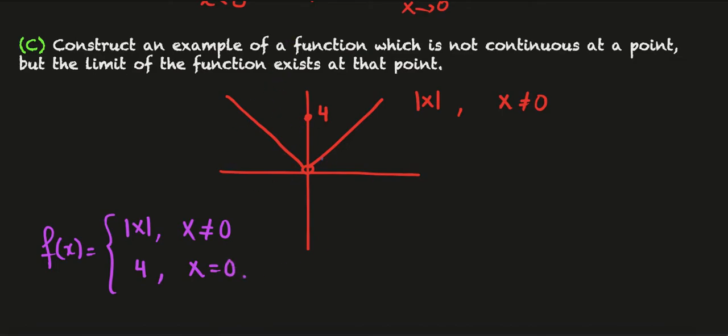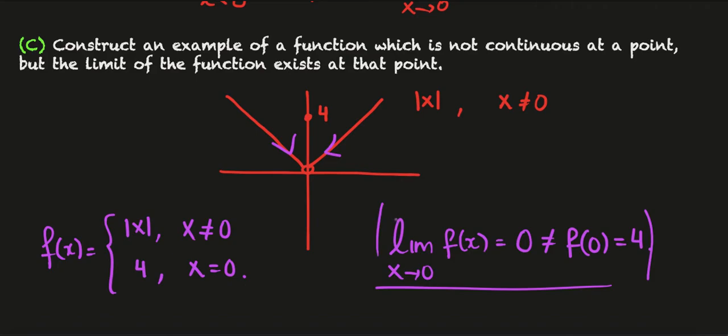What's useful about this or what's interesting is that the limit does exist. When we approach from the left and the right the limit of the function as x tends towards zero is defined and it's equal to zero, but that's not equal to the function value because the function value is four.